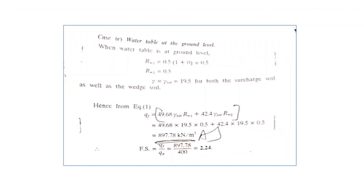For the last case, water table is at ground level. R_w1 = 0.5 and R_w2 = 0.5. Both γ₁ and γ₂ will be γ_sat = 19.5 kN/m³, since the entire soil profile is submerged. This is a straightforward case and a very good conclusion.